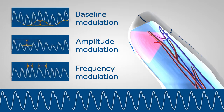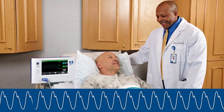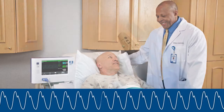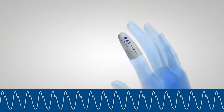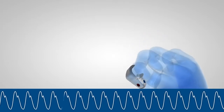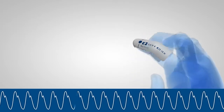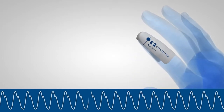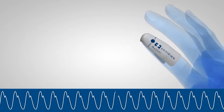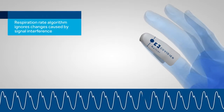Over time, these averages are converted to a weighted average. With continuous monitoring, the algorithm responds to the weighted averages of the individual patient. Importantly, changes associated with patient movement, blood pressure or other anomalies may be identified as signal interference and will be ignored by the algorithm.